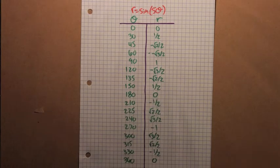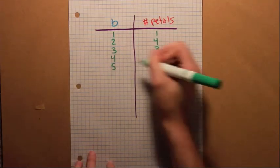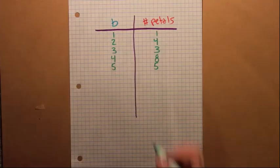When b is equal to 5, we get 5 petals. And for b equals 6, we get 12 petals.